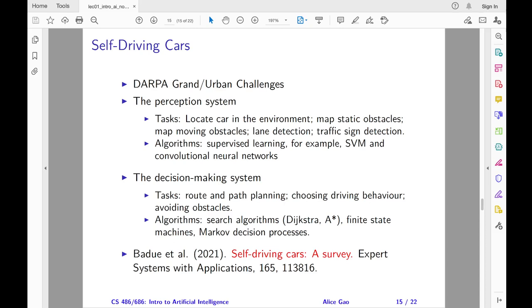In 2007, the DARPA Urban Challenge took place in the former George Air Force Base in California. Cars needed to complete a 60-mile course in a simulated urban environment, interacting with other self-driving and human-driving cars within six hours. The first three places went to CMU's car Boss, Stanford's car Junior, and Virginia Tech's car Odin.